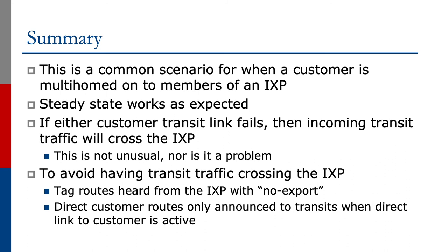So this is a common scenario for when a customer is multi-homed onto members of an Exchange Point. Steady state traffic flow works as expected. And if either customer transit link fails, then it's quite likely that incoming transit traffic will cross the Exchange Point — it's not unusual, nor is it a problem. If you want to avoid having transit traffic crossing the IXP, then tag the routes heard from IXP peers with NoExport. Direct customer routes will only be announced to transits when the direct link to the customer is active. As soon as the direct link to the customer fails, the only BGP paths heard will be across the Exchange Point, they'll be tagged with NoExport, and therefore no longer announced to the global Internet.